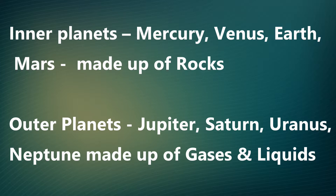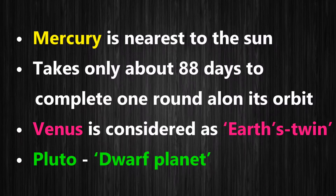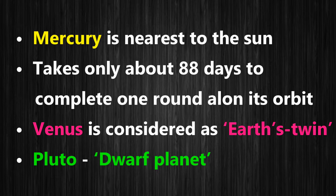The inner planets — Mercury, Venus, Earth, and Mars — are made up of rocks. The outer planets — Jupiter, Saturn, Uranus, and Neptune — are made up of gases and liquid. Mercury is the nearest to the Sun; it takes only 88 days to complete one round along its orbit.